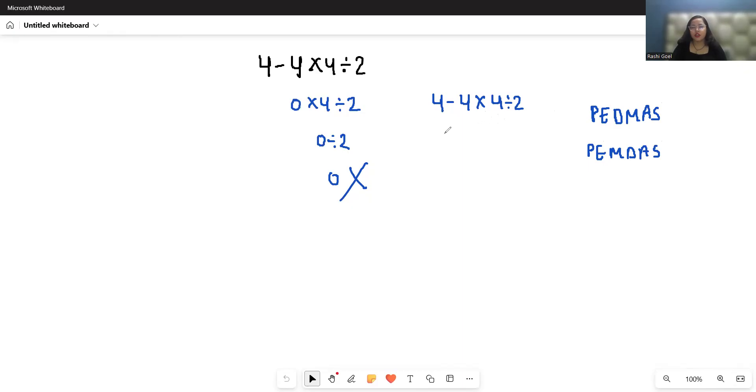So 4 - 4 × 4 ÷ 2. First, 4 × 4 is 16. Then 4 - 16 ÷ 2. 16 divided by 2 is 8, so 4 - 8, that is -4.